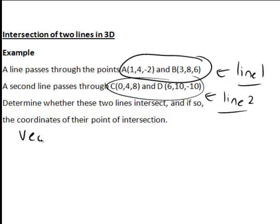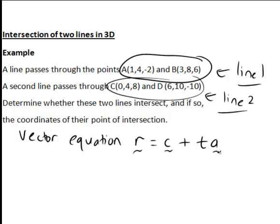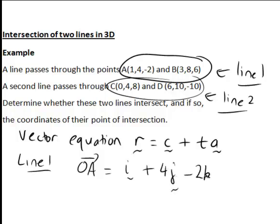Remember that when finding a vector equation of a straight line, it is of the form R equals C plus TA, where R is the position vector of a general point on the line, C is the position vector of a specific point on the line, T is a parameter, and A is a vector in the direction of the line. So for line 1, the point C which is on the line — we could pick OA, the position vector of A, which will be i plus 4j minus 2k.